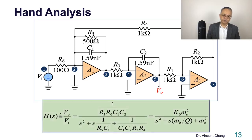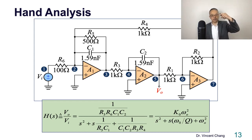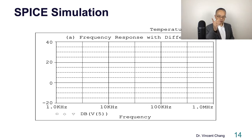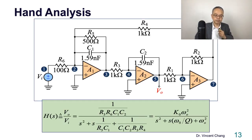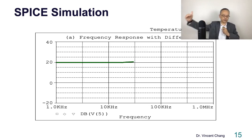That shouldn't be hard. Here is the low-pass hand analysis result. The process is very similar to the band-pass version I showed on the previous slide. Now I'll show you the simulation frequency response. This is a low-pass filter, so at low frequency the gain should be constant — the low-frequency gain — and the simulation shows 20 dB.